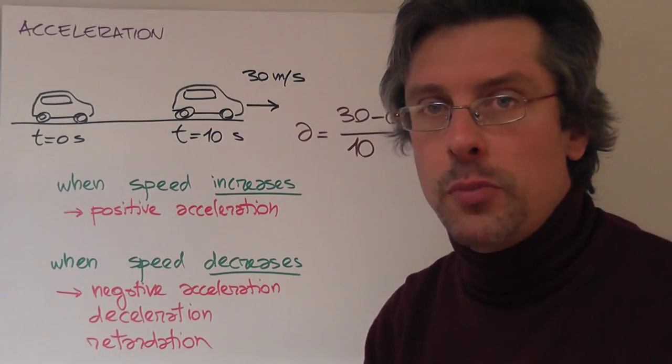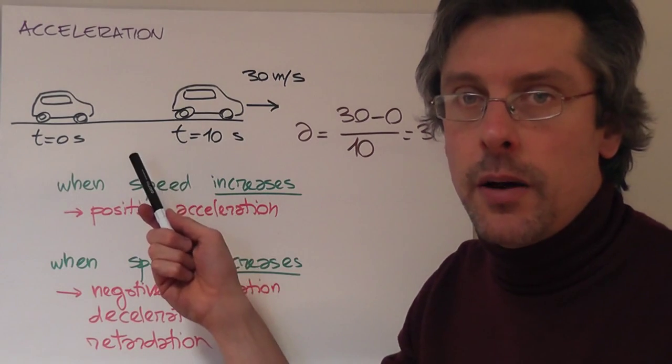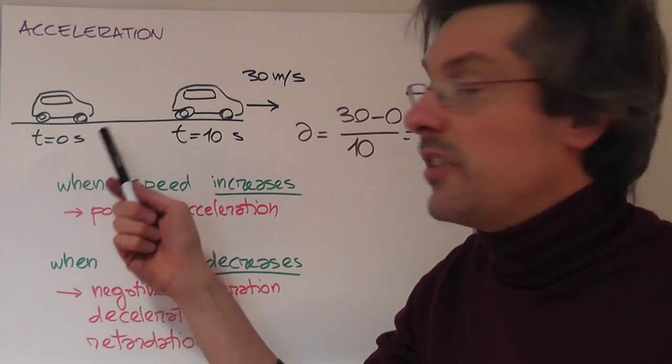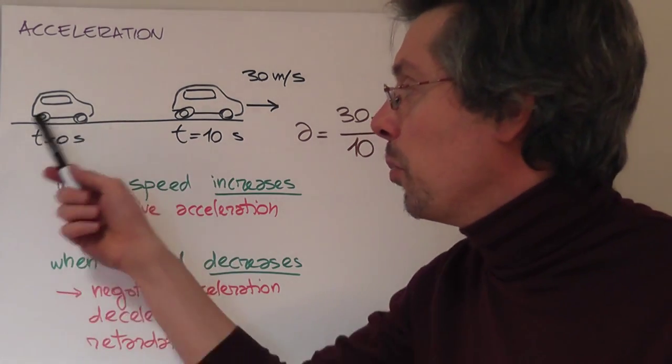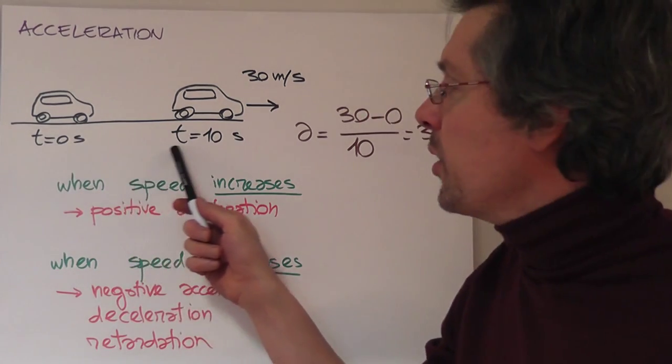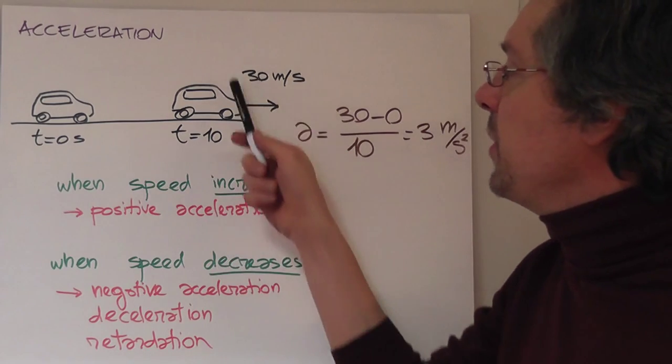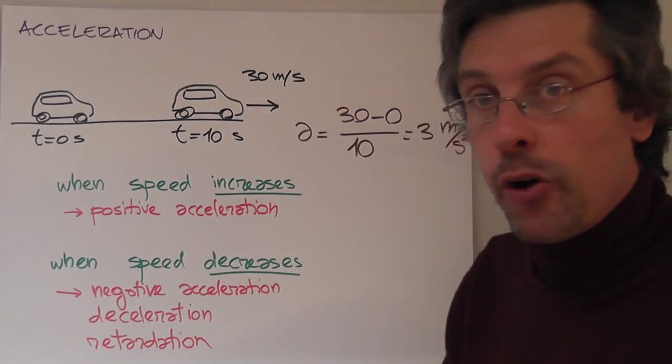So let's put this formula to use. A very typical example, a car that starts from rest, that means with zero speed and we'll put the time equal zero, and then increases its speed and after 10 seconds has reached a speed of 30 meters per second. So let's use our formula.